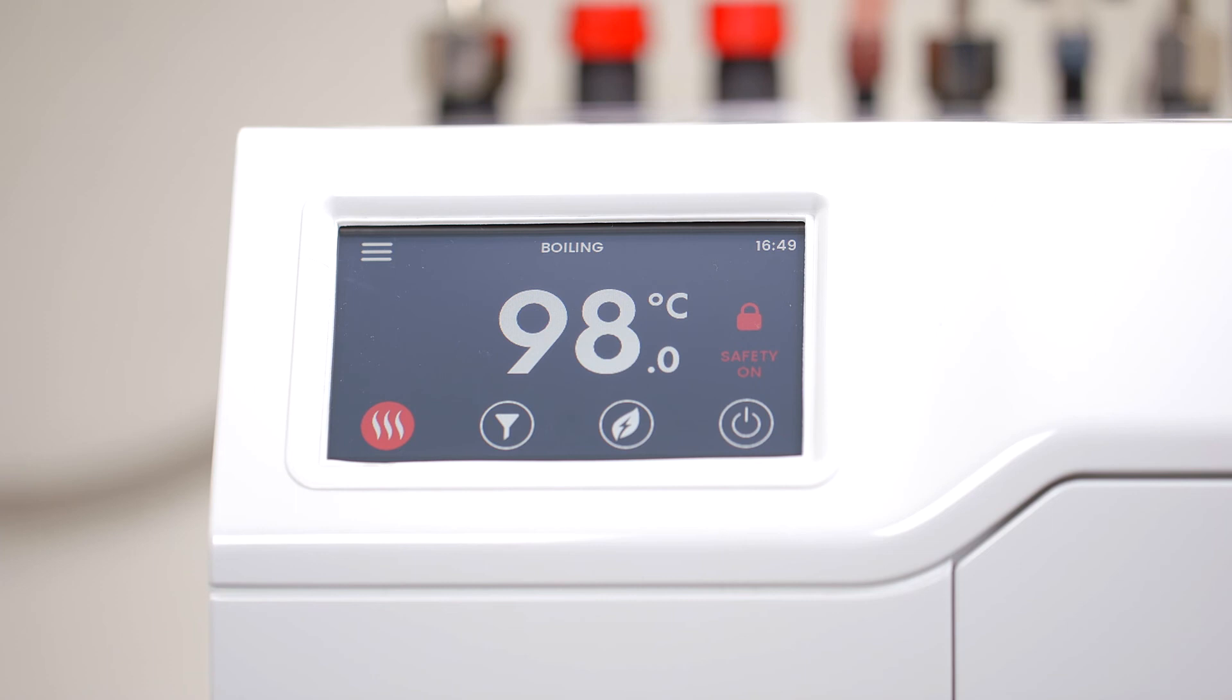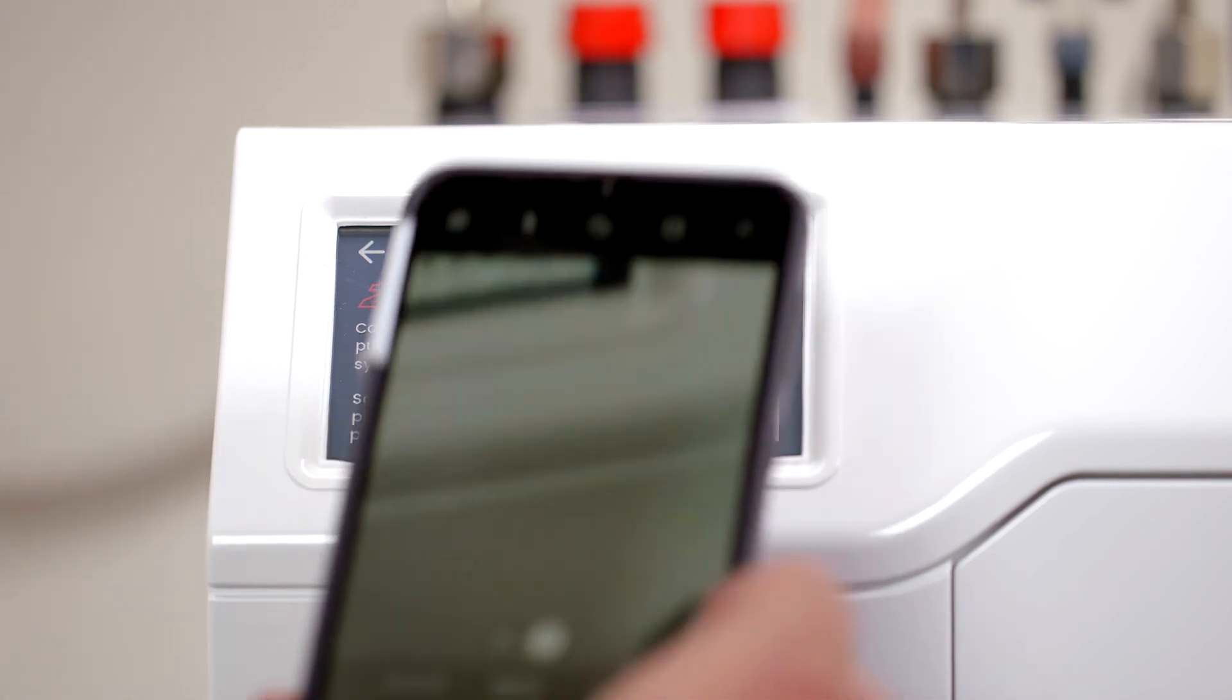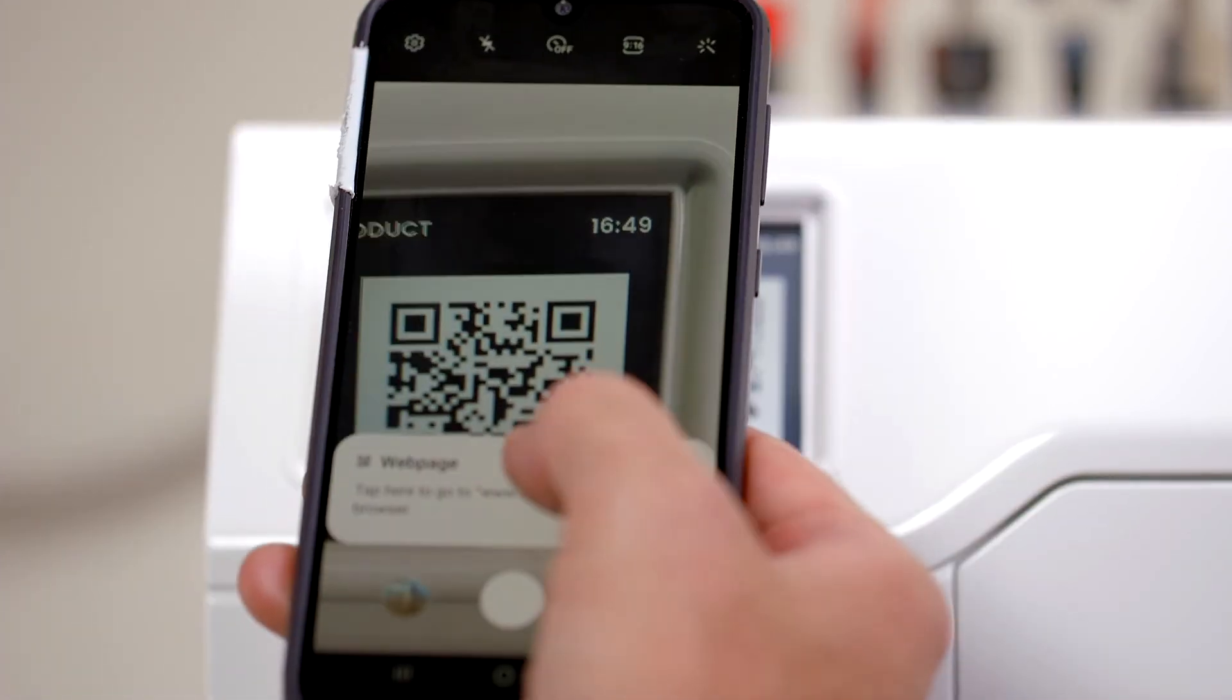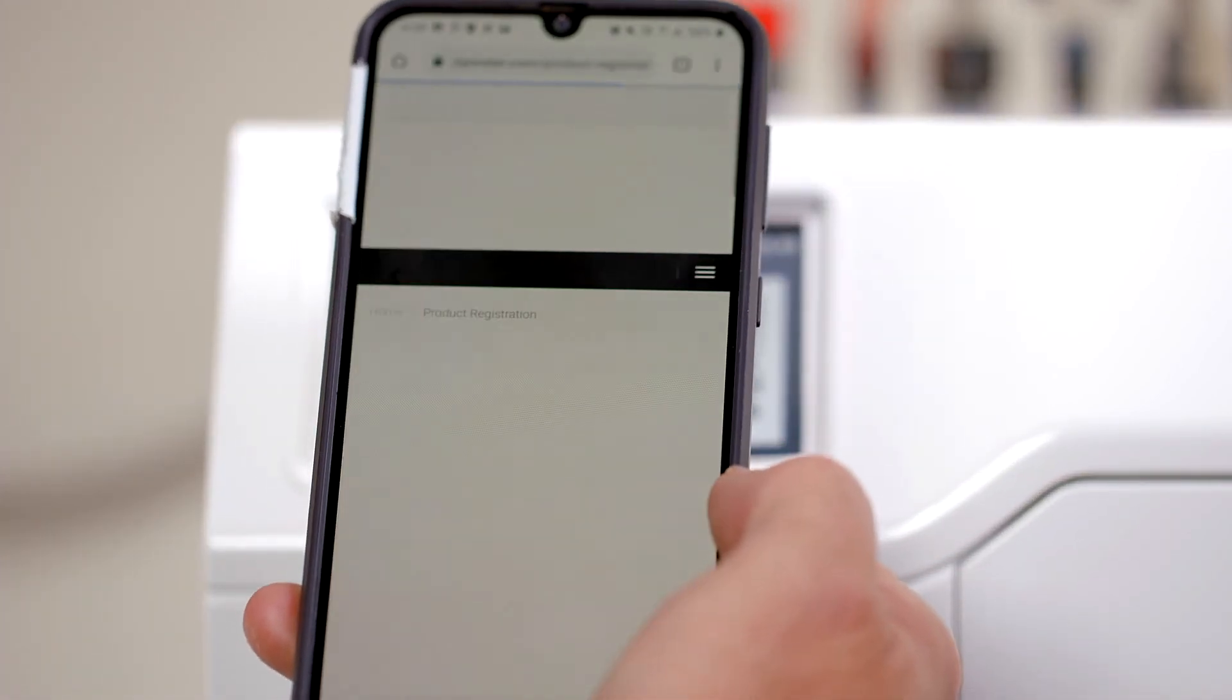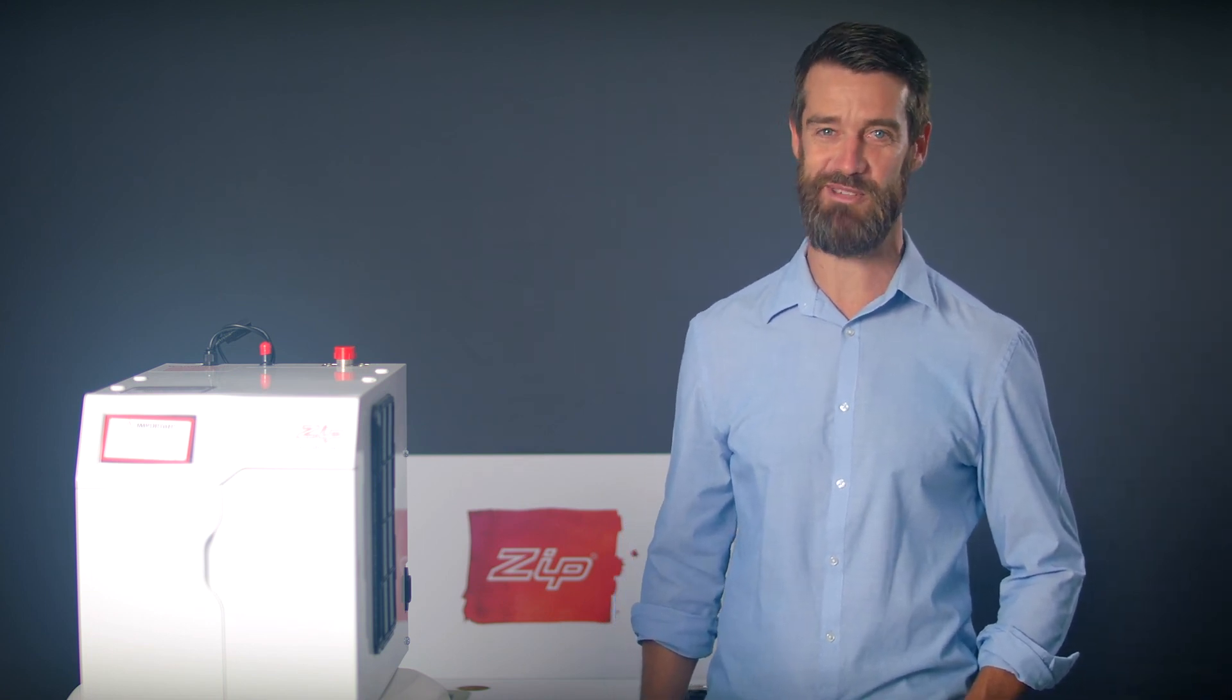You can register your hydra tap via a QR code. To do this press the menu symbol then register product and the QR code will appear on the screen. Use your phone or tablet to scan the code and register your product. Please visit zipwater.com for any further help videos or information on your new hydra tap g5.